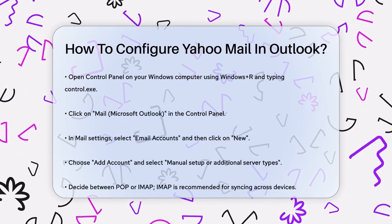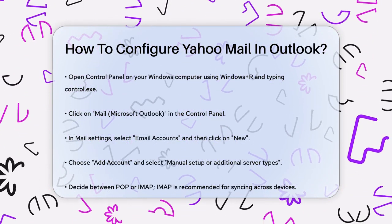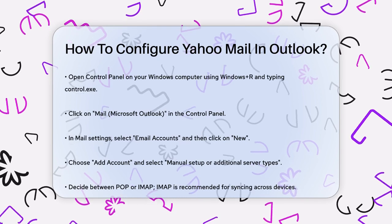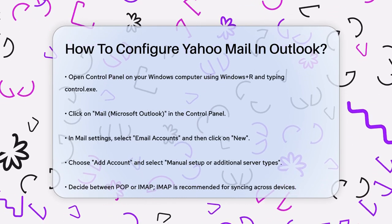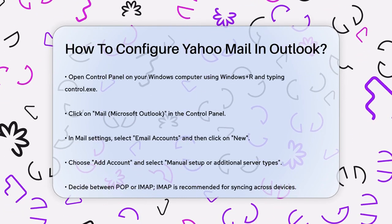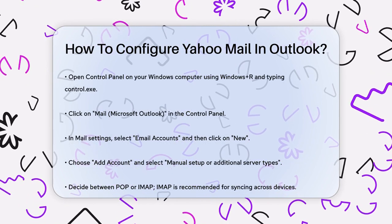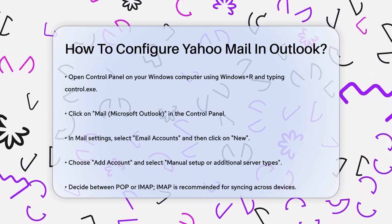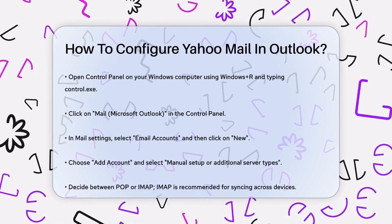First, you need to open the Control Panel on your Windows computer. You can do this by pressing Windows+R, typing control.exe, and then clicking on Mail Microsoft Outlook.